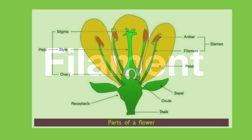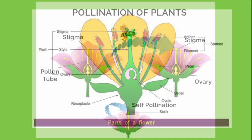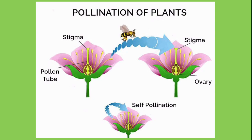The filament, which you can see on this diagram here, simply holds up the anther. It holds it nice and far out of the flower so that it's more likely that the pollen will get spread.